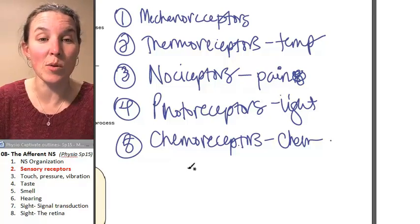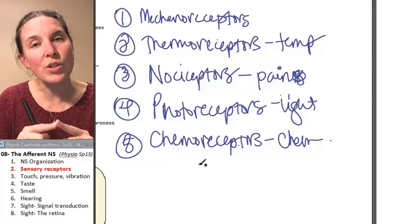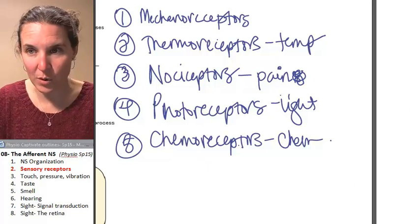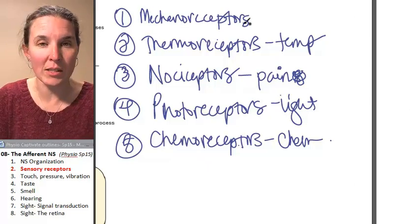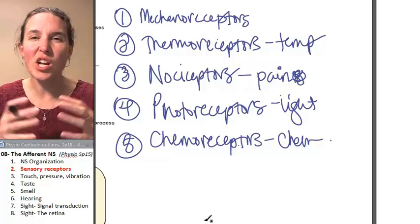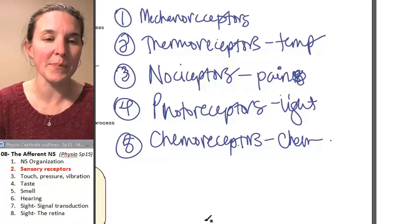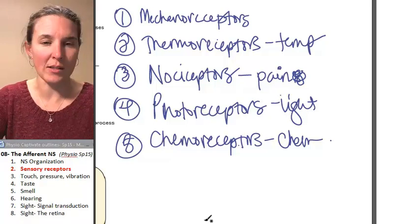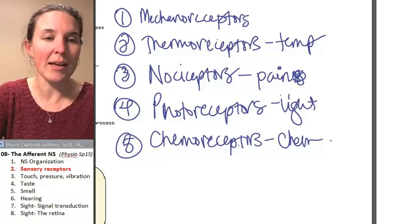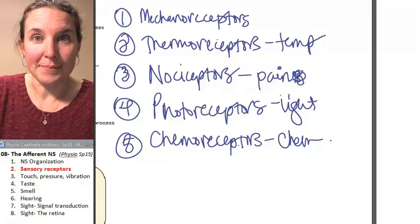So the first group of receptors that we're going to talk about are mechanoreceptors. They're general sensory structures that respond to touch and pressure in the periphery.